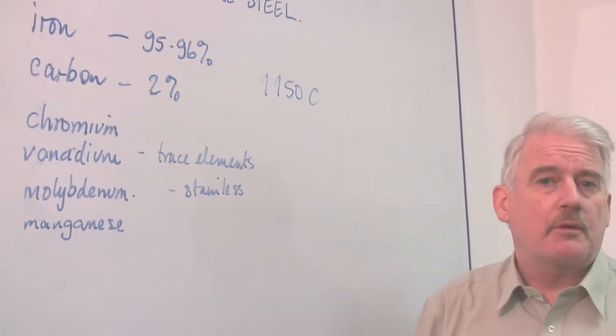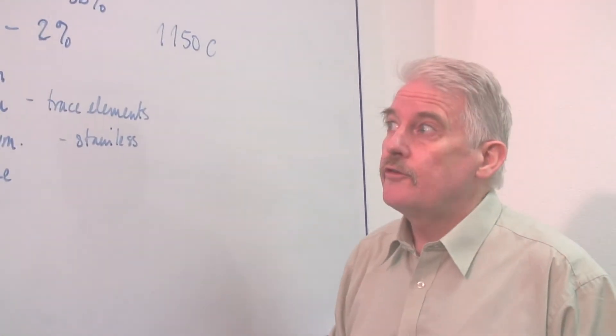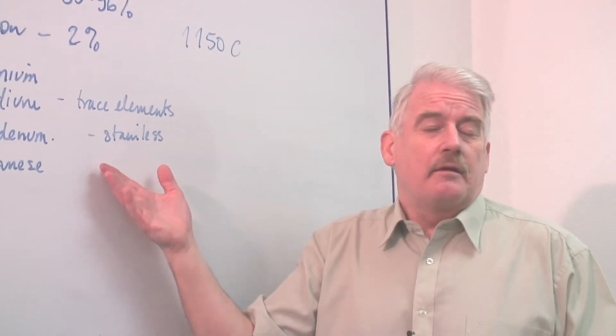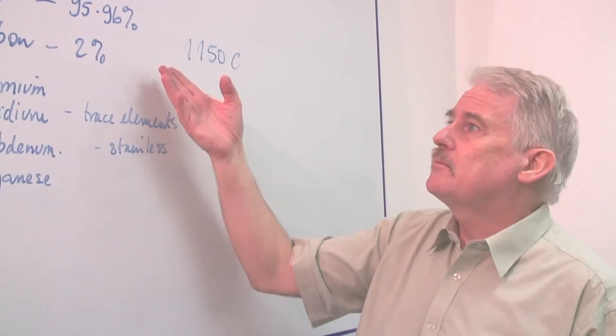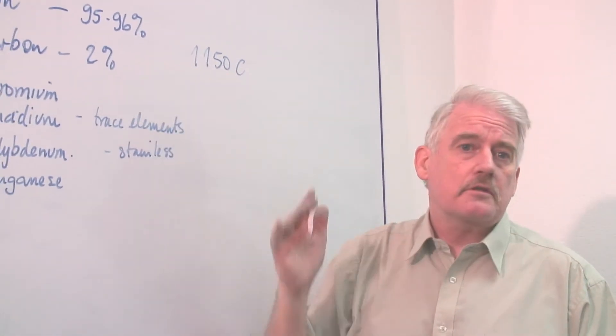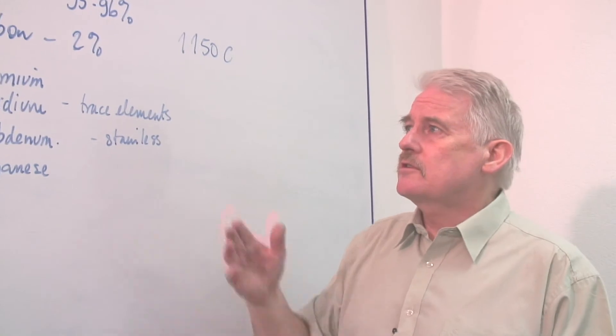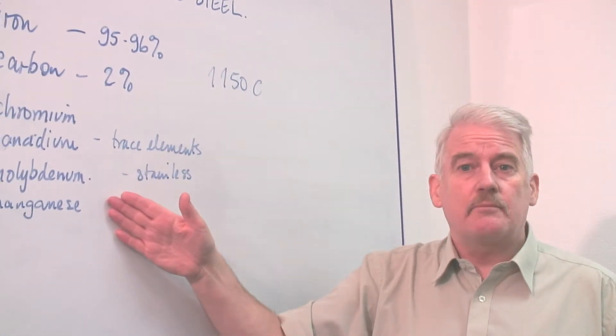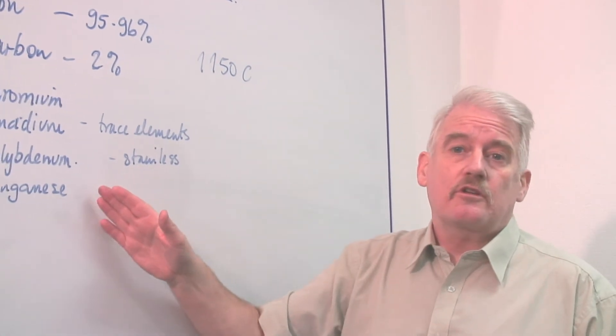And particularly, one of the properties you're looking for is something like stainless properties. That is, a property of steel that will not rust. And the problem with all iron products is they do rust. But steel, with its 2% carbon plus these other trace elements, has the property that it does not rust.